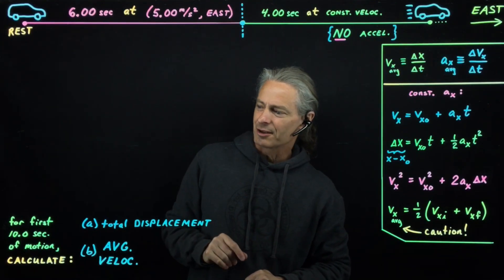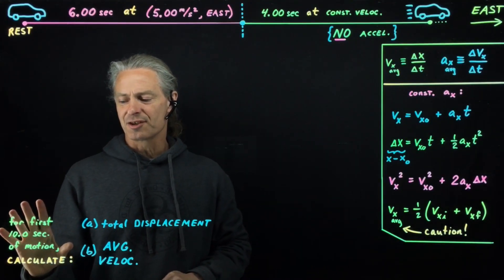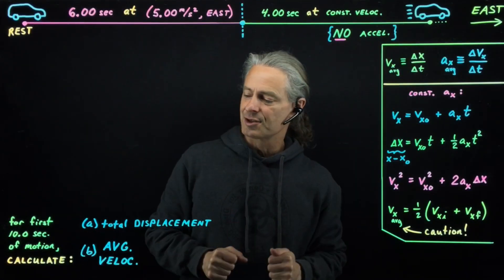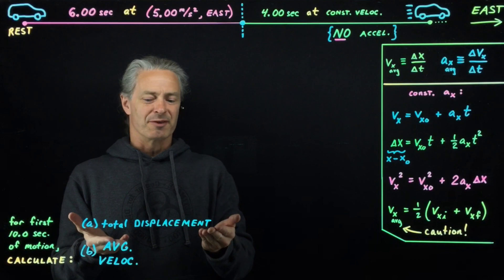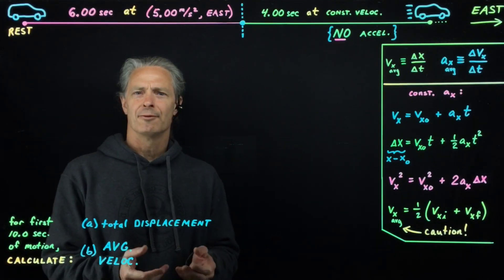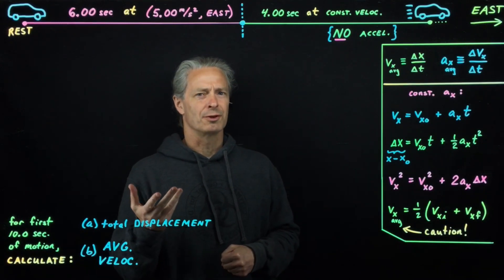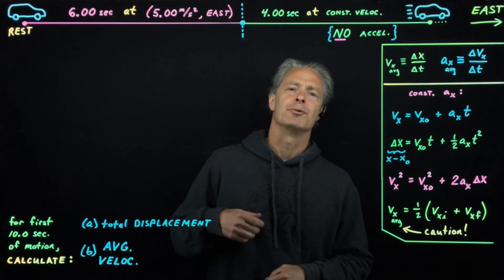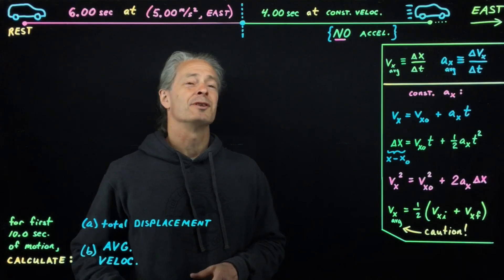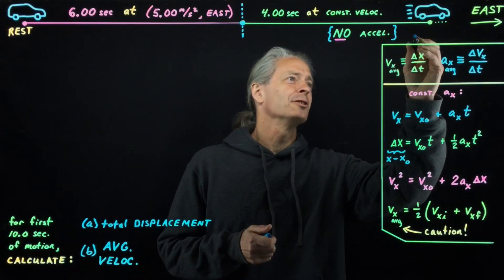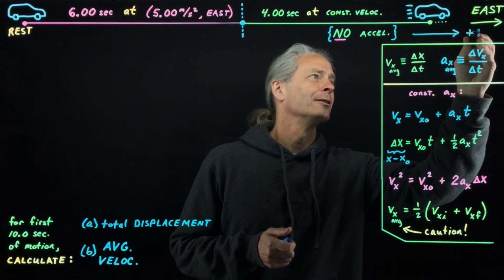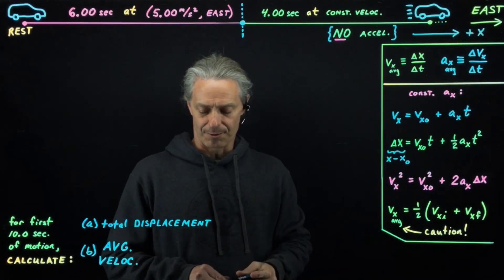What we're asked to calculate is, for the first 10 seconds of motion — that includes the first six seconds and the next four seconds — what is the total displacement of the car and what is the car's average velocity? Before going any further, we should choose a coordinate system and then put our given quantities in terms of that coordinate system. I am going to take our positive x direction to be to the east, so I'm going to indicate that right here.